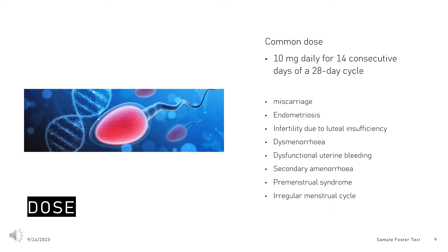Premenstrual Syndrome (Adult): 10 mg twice daily from day 11 to 25 of the cycle. Alternatively, 10 mg twice daily starting on the second half of the menstrual cycle until the first day of the next cycle; initial treatment day and duration will depend on the individual cycle length. Irregular Menstrual Cycle (Adult): 10 mg twice daily from day 11 to 25 of the cycle. Alternatively, 10 or 20 mg daily starting on the second half of the menstrual cycle until the first day of the next cycle; initial treatment day and duration will depend on the individual cycle length.